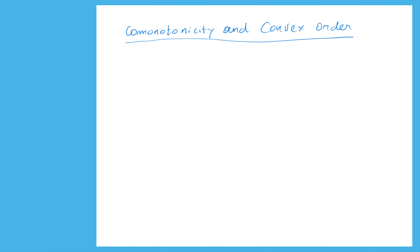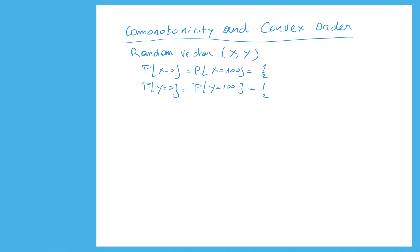In this exercise we will investigate the relationship between a sum of comonotonic random variables and the convex order. We focus on a random vector X,Y with marginal distributions X and Y having the same marginal distributions. X and Y can either take value 0 (no loss) or value 100 (a loss of $100). We encountered this vector with these margins also in the other exercise where we investigated the independence and the mutual exclusive case.